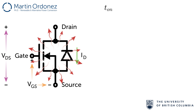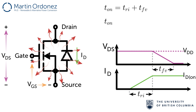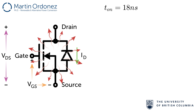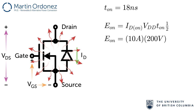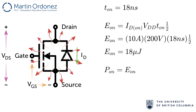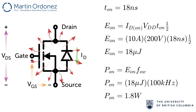For turn-on losses, we first need to find the total turn-on time: the current rise time plus the voltage fall time, so 10 ns plus 8 ns for a total transition time of 18 ns. The turn-on energy is ID_on times VDD times the total transition time divided by 2: 10 amps times 200 volts times 18 ns divided by 2, giving a turn-on energy of 18 microjoules. Finally, turn-on power losses equal the turn-on energy times the switching frequency: 18 microjoules times 100 kHz, which gives 1.8 watts of turn-on losses.